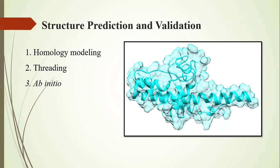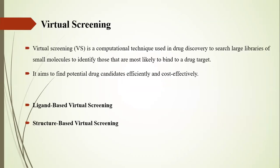If we cannot get a good template, we jump into the threading approach, where we cut all available structures into small threads or folds and use those for three-dimensional structure prediction. If we cannot get a good thread, we jump into the ab initio approach, which is the most unreliable approach — we start from scratch and use different methods to predict the structure based on available residues of the protein. We then have to validate the structure through different evaluation tools, checking the backbone torsion angles, phi angle, psi angle, alpha helices, and beta sheets. After that we can decide whether the structure is reliable or not.